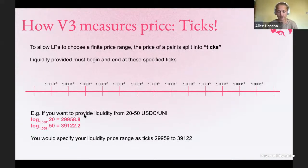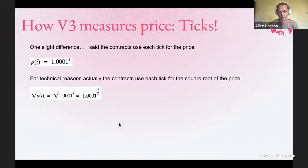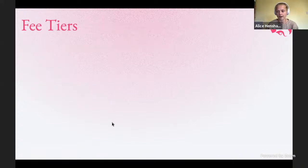Sounds kind of confusing, but lots of this is done in the background. At the end of this presentation, I will show you where in our code you can integrate, so you don't have to understand all of the complex math going on in the background. In the contracts, we implement a square root price for various technical reasons. If you want to understand more about why, you can take a look at the Uniswap V3 white paper. But for now, understanding it as a power of 1.0001 is enough.